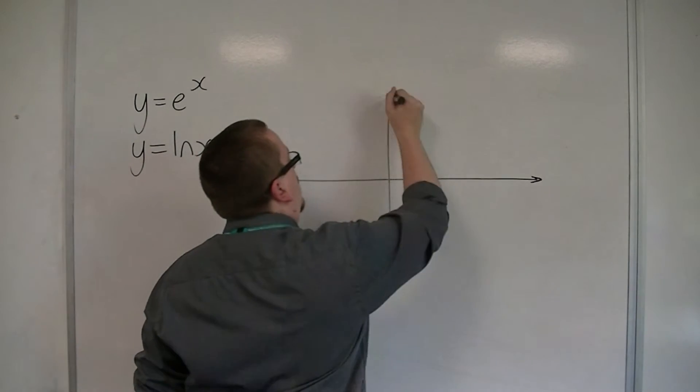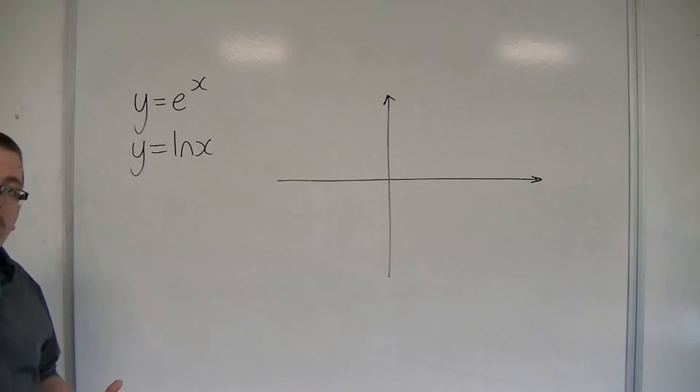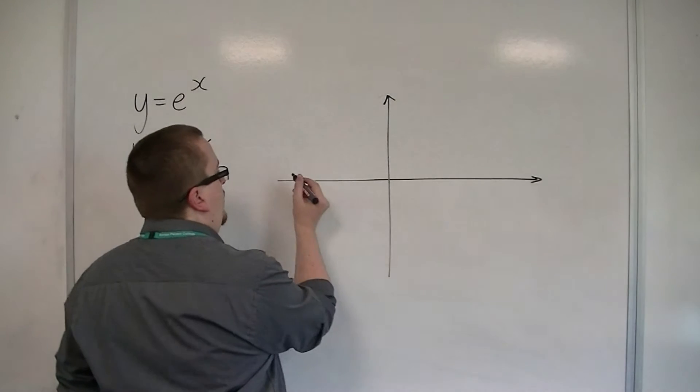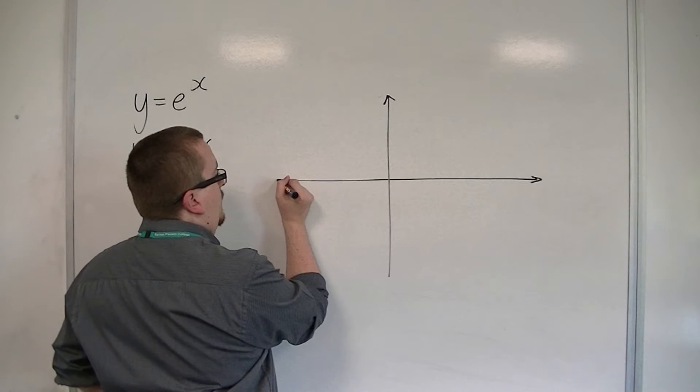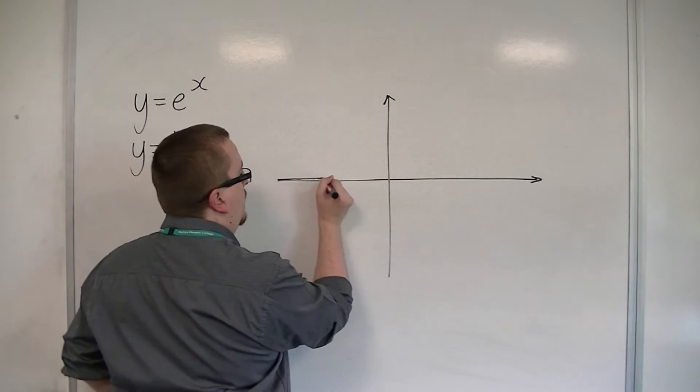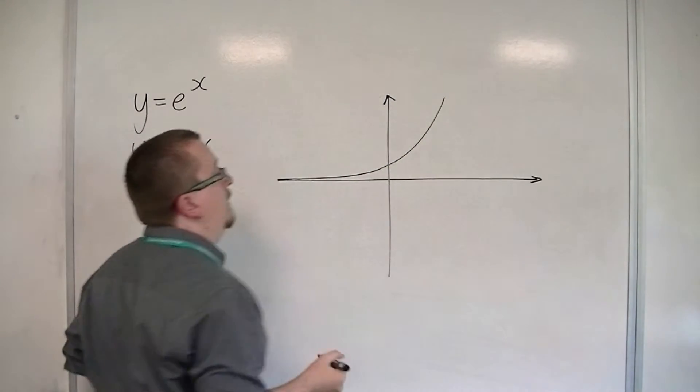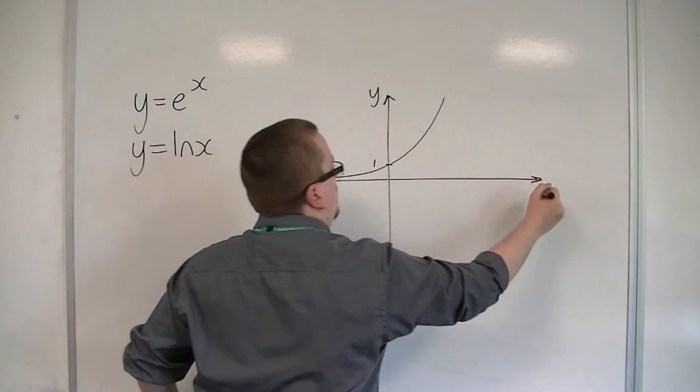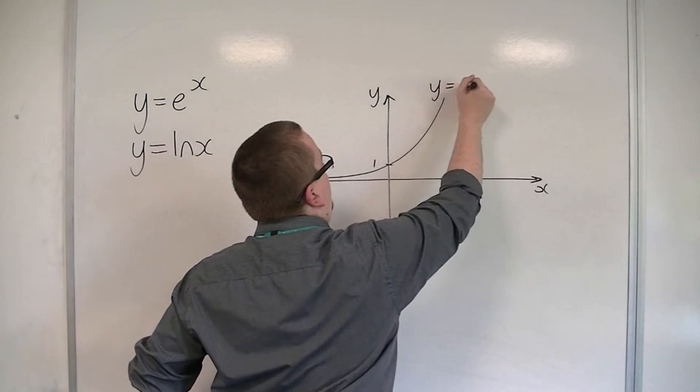So we know what y equals e to the x looks like. It looks like y equals 2 to the x or 3 to the x. OK, so it starts off very close to the x-axis here, increases, goes through 1 on the y-axis. OK, so that's y equals e to the x.